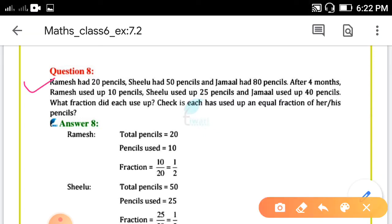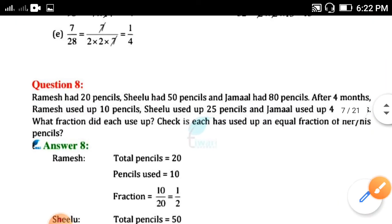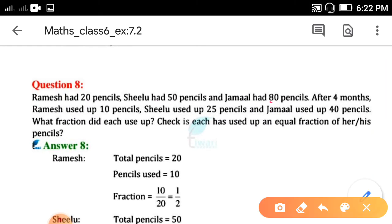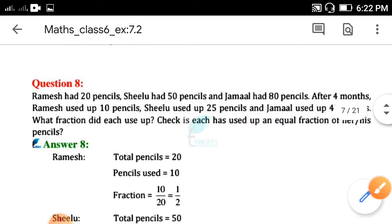Ramesh had 20 pencils, Sheelu had 50 pencils, and Jamaal had 80 pencils. After 4 months, Ramesh used up 10 pencils, Sheelu used up 25 pencils and Jamaal used up 40 pencils. What fraction did each use up? Check if each has used up an equal fraction of her or his pencils.